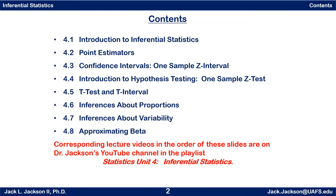Next we look at the more realistic situation where a t-test and t-interval are appropriate, examining both one-sample and two-sample situations. From there we move on to inferences about proportions, and then finally inferences about variability, again performing both one-sample and two-sample tests. We conclude by looking at approximating beta.